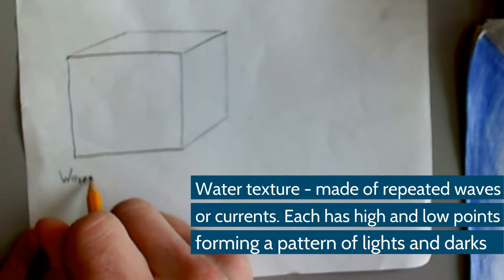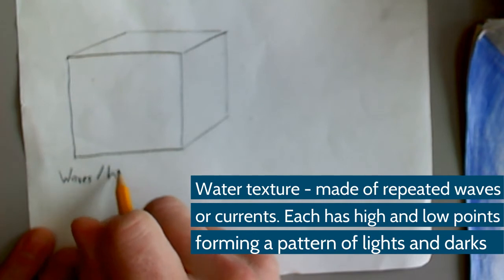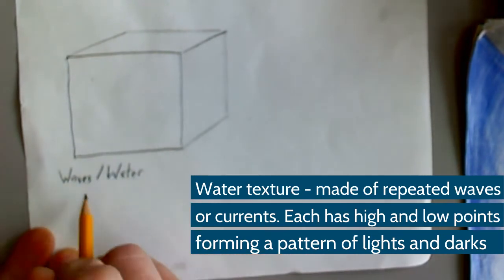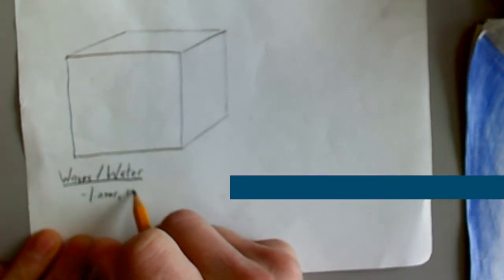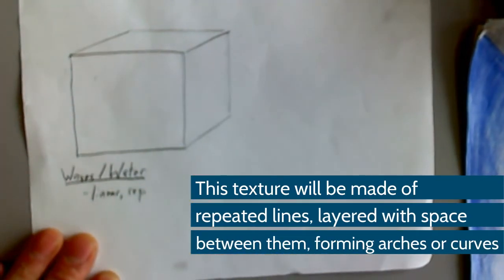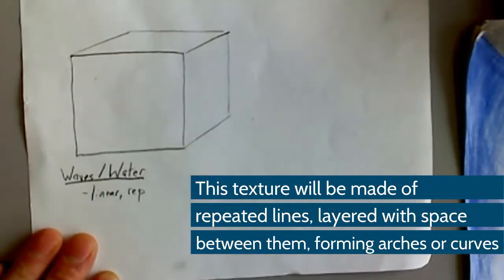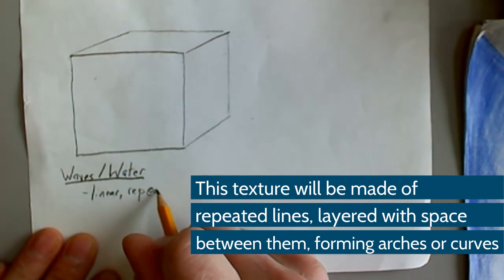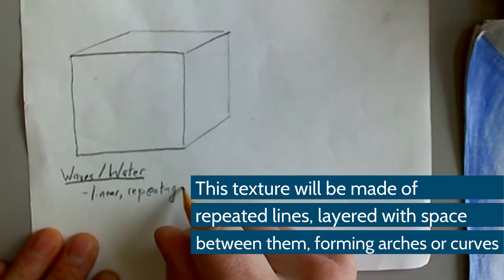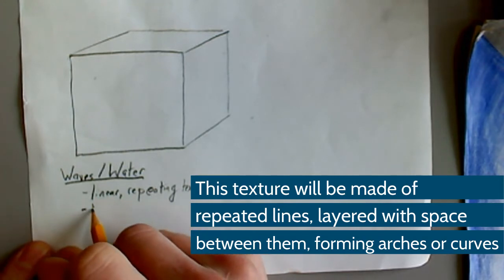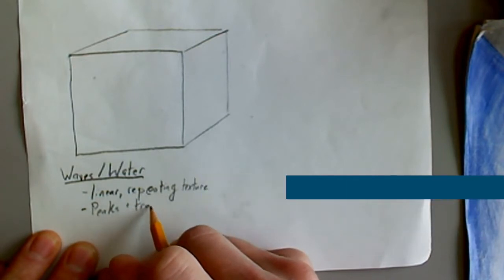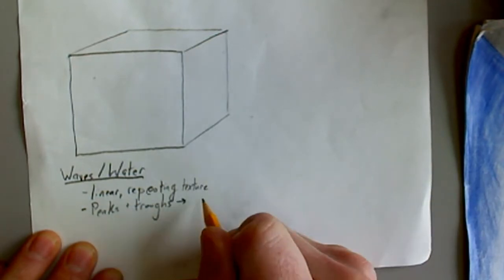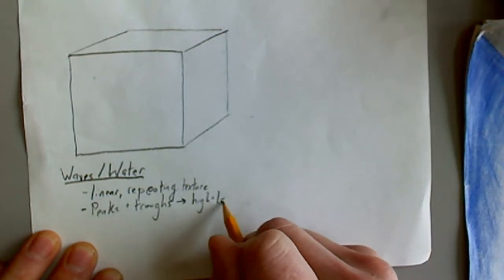Now let's think about what we know about water and waves. Once again, this is going to be a linear sort of texture. There are going to be layers of individual waves, which are high spots in the water, followed by low spots or troughs in the water. This is a repeating texture that makes a pattern. And again, that pattern is made of peaks where the water is higher and more likely to be reflecting the sun or the light around us, and troughs where the water is likely to be lower and in shadow.